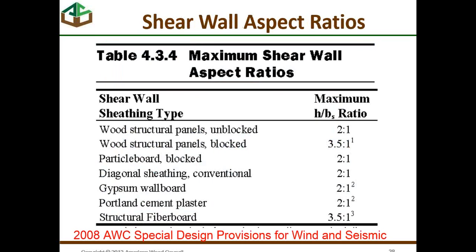There are maximum aspect ratios for wall panels, and this question was asked last week. For wind, assuming a blocked panel, the maximum ratio is 3.5 to one. This is covered in the wind and seismic provisions developed in 2008 by the Wood Council.